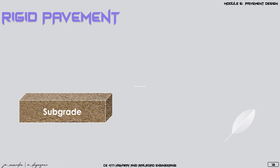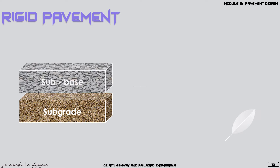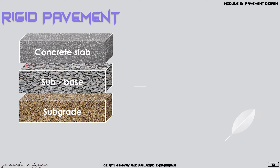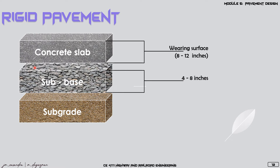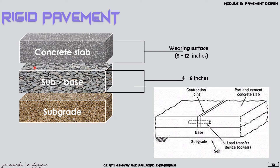In terms of the layers for rigid pavements, we have the subgrade for existing soil, then the sub-base, and then the concrete slab. An optional base layer can be placed between the sub-base and the slab. For the thicknesses: the concrete slab or wearing surface has a thickness of 8 to 12 inches, and the sub-base has a thickness of 4 to 8 inches. In a section of the rigid pavement, the construction joint is along the connection between slabs, and within the two slabs we have the dowels or load transfer devices.